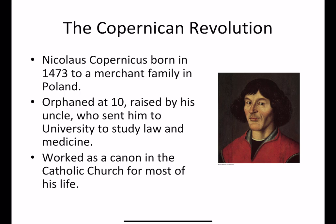Nicholas Copernicus started a revolution in our understanding of astronomy — the Copernican Revolution. Copernicus was born in 1473 to a merchant family in Poland, orphaned at 10, raised by his uncle who sent him to study law and medicine. He was a devout Christian and took a job in the Catholic Church as a canon — the equivalent of administrative assistant — which was the only job he did for most of his life. He was also tremendously interested in astronomy.